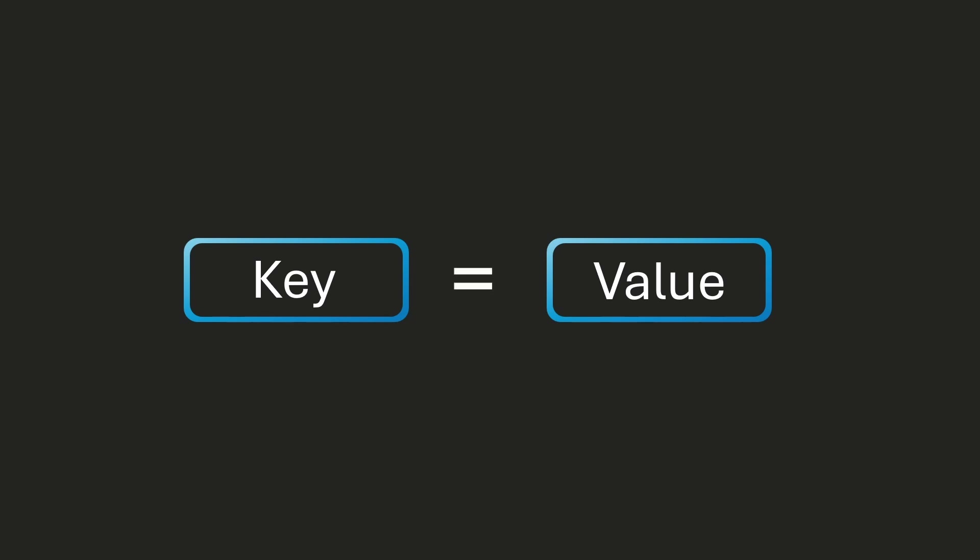The basic idea of a dictionary is creating an association between the key and the value. So a key could be something like 'age' and a value associated with that key could be a number, for example 20 or 30.